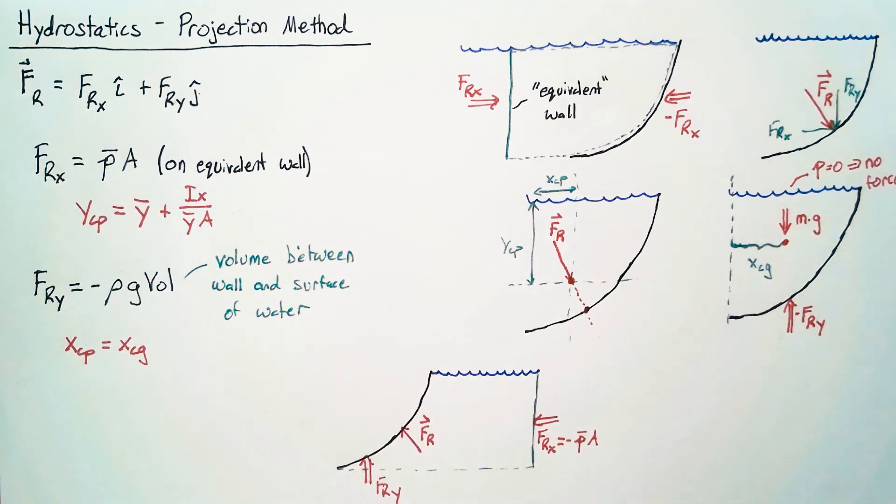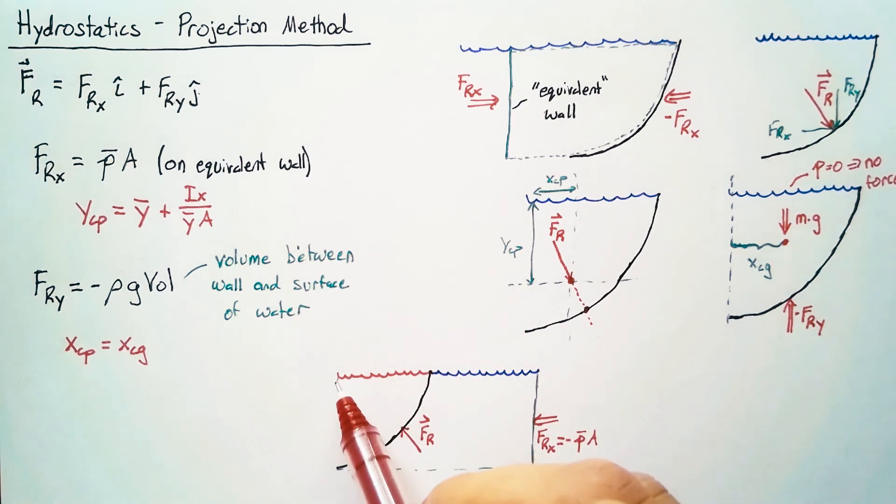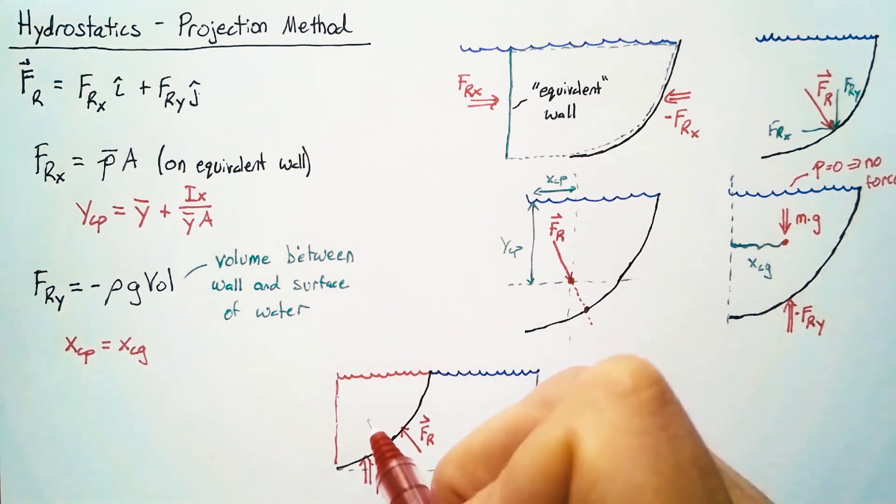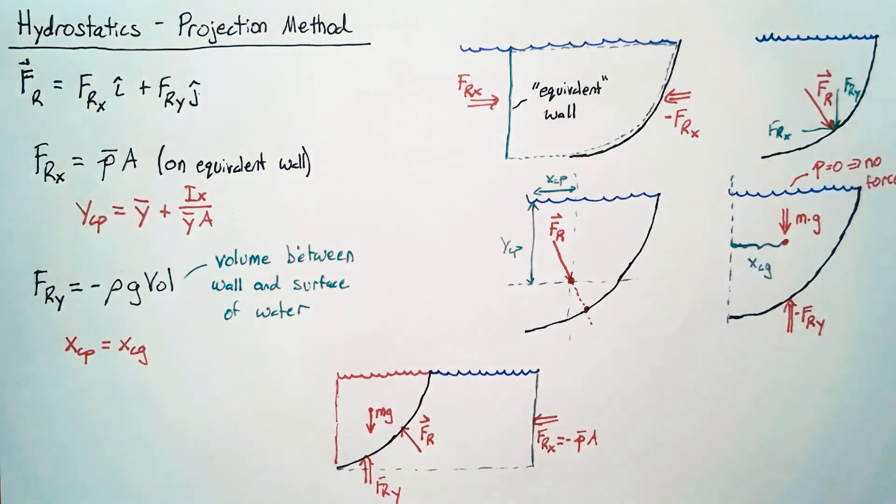So where's the surface of the water? Well, the surface is here and so the volume that we're interested in is actually the volume between our wall and the surface that we have here. The way we've drawn it, this volume would have some mass that is going to be pushing down.